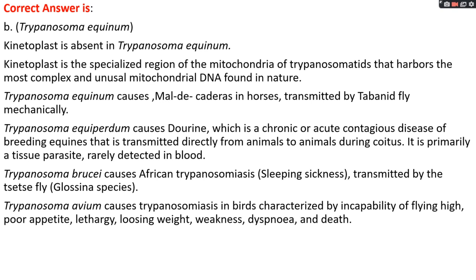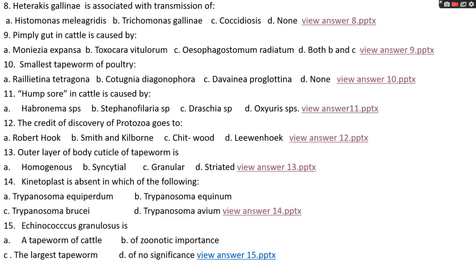Trypanosoma brucei causes African trypanosomiasis, known as sleeping sickness, transmitted by tsetse fly — Glossina species. Trypanosoma avium is a trypanosoma seen in birds; it is mainly characterized by inability to fly high, poor appetite, lethargy, weight loss, weakness, and dyspnea.